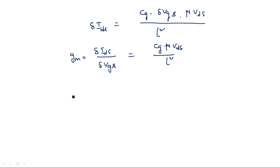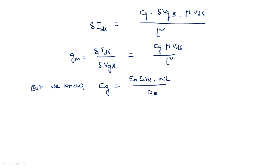Taking delta Vgs to the left-hand side, delta Ids by delta Vgs equals Gm equals Cg times mu times Vds divided by L squared. This is the definition of transconductance Gm. We also know that gate capacitance Cg equals Epsilon-0 times Epsilon-insulator times W times L divided by D. Substituting this Cg into the equation gives Gm equals Epsilon-0 times Epsilon-insulator times W times L divided by D, times mu times Vds over L squared.